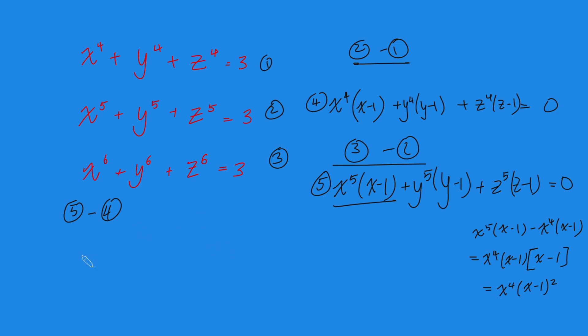So, all in all, this just becomes x^4(x - 1)^2 + y^4(y - 1)^2, because it's the exact same thing for y's, and then plus z^4(z - 1)^2. And this equals 0 minus 0, which is still 0.